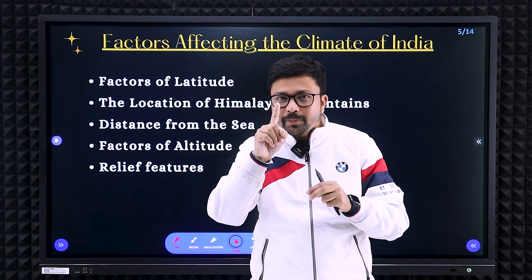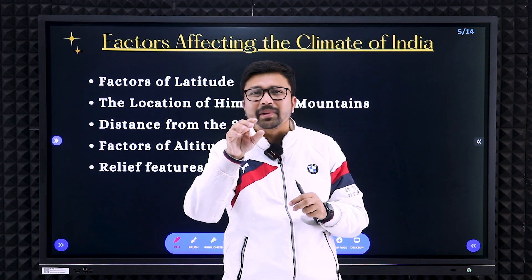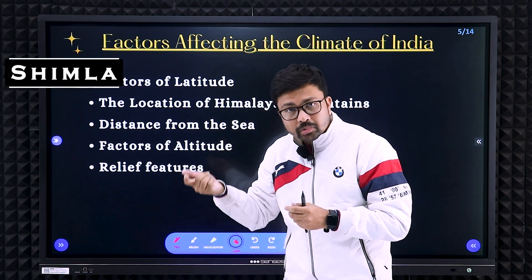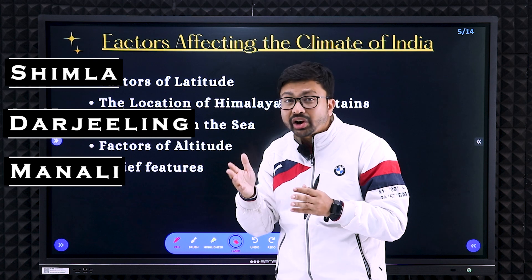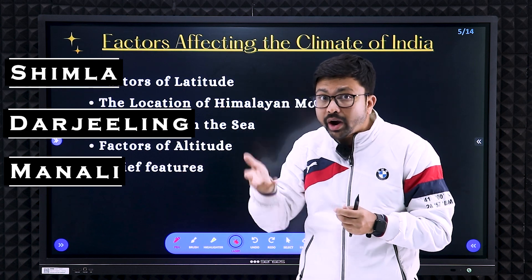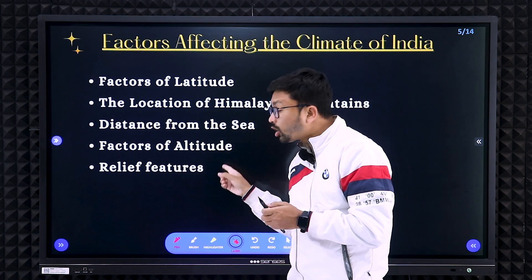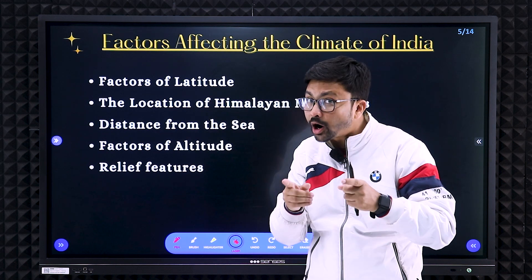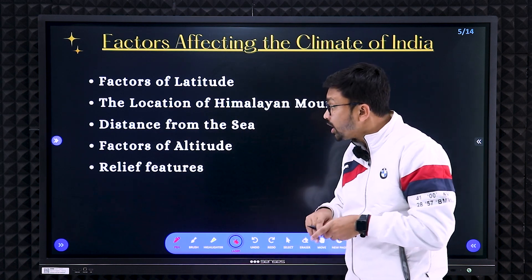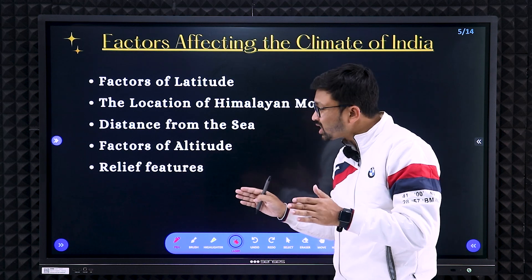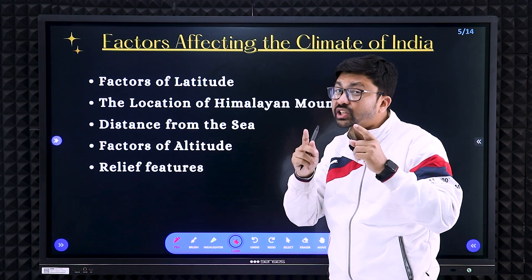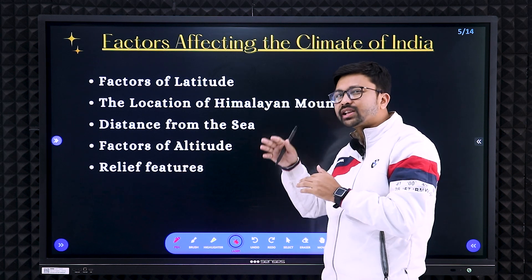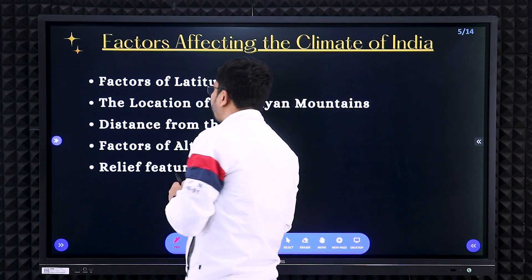For altitude: if a hill station name like Shimla, Darjeeling, or Manali is given, its temperature is low because of the factor of altitude — as height increases, temperature decreases. That is called the normal lapse rate of temperature. Next, relief features control climatic conditions, especially rainfall distribution, which we will discuss in the next part.